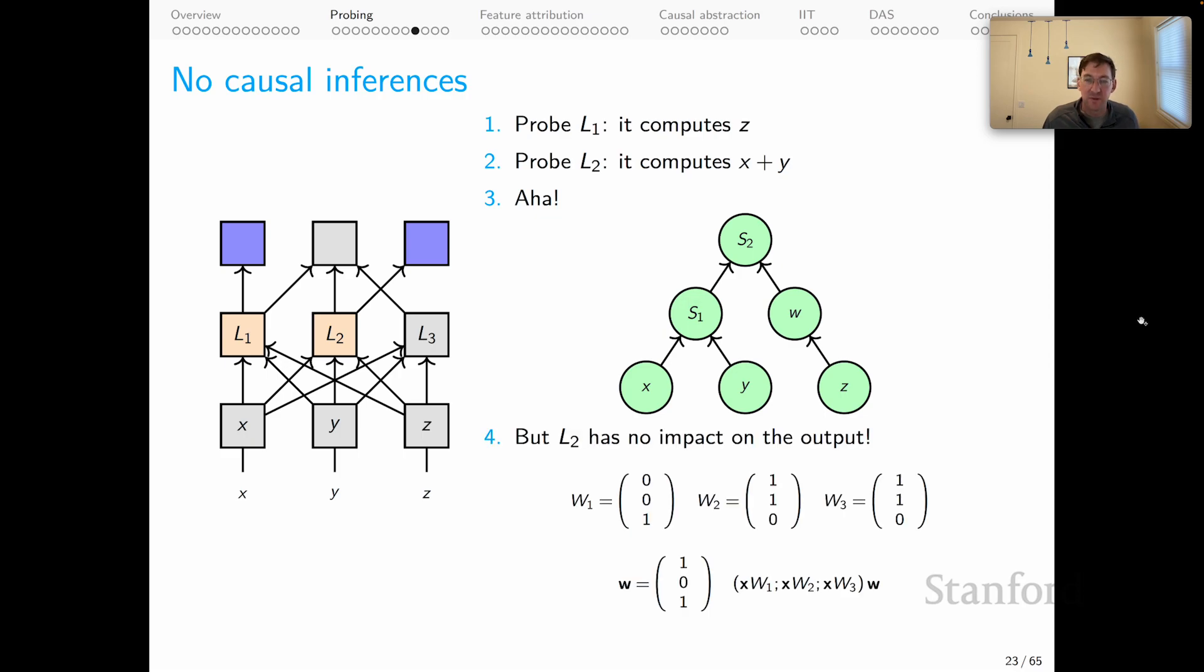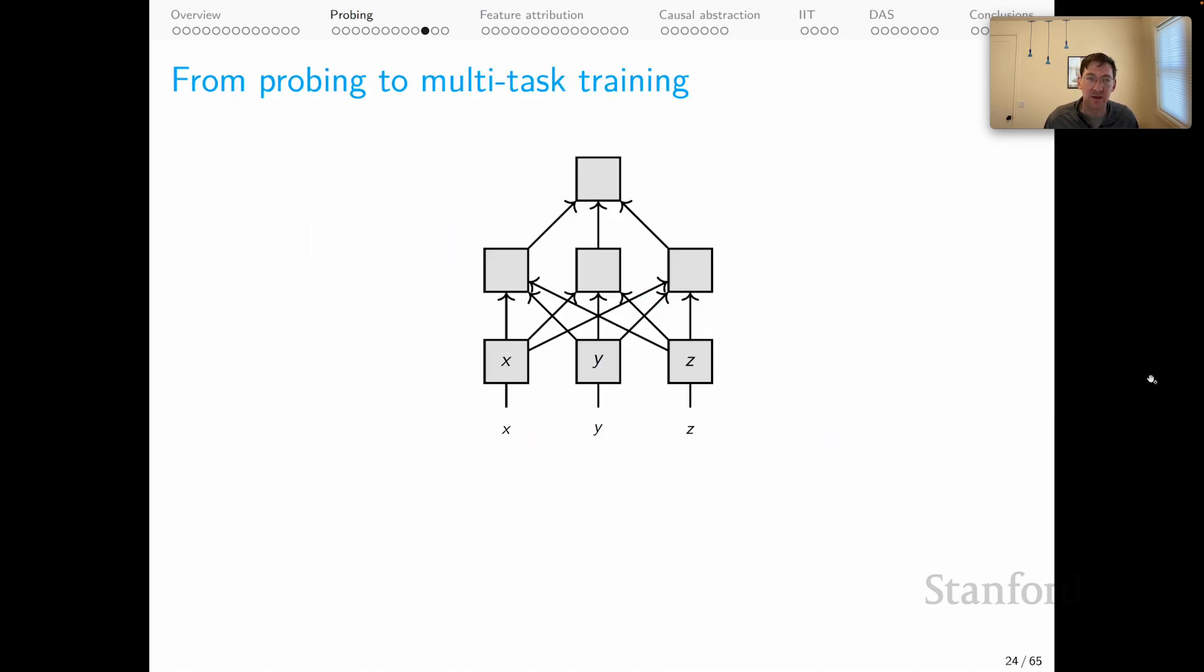But the probes have misled you. Here is a look at the full internal structure of this model. This is all the weight parameters. Again, this model performs our task perfectly. But the point is that L2 has no impact at all on the output behavior. And one way to see that is to look at the output vector of weights. L2 is just zeroed out as part of this computation, no causal impact. The probe said it stored X plus Y. And it might be doing that. In fact, it is doing that, but that has nothing to do with the input-output behavior. So the probe in that deep way, in that causal way, misled us.